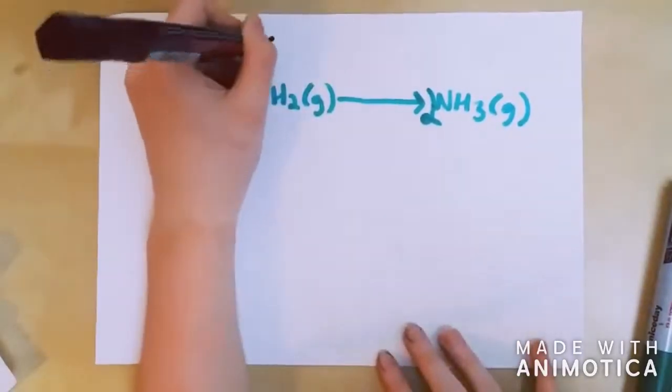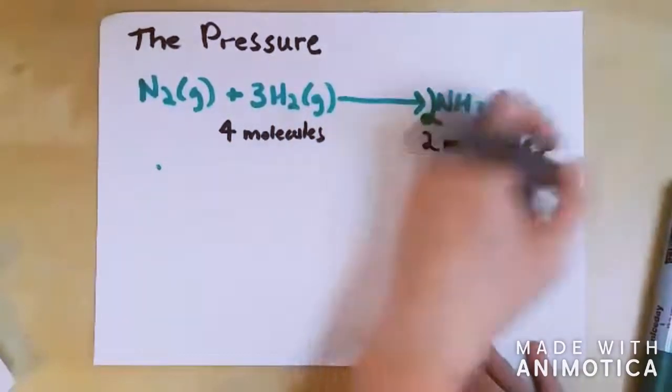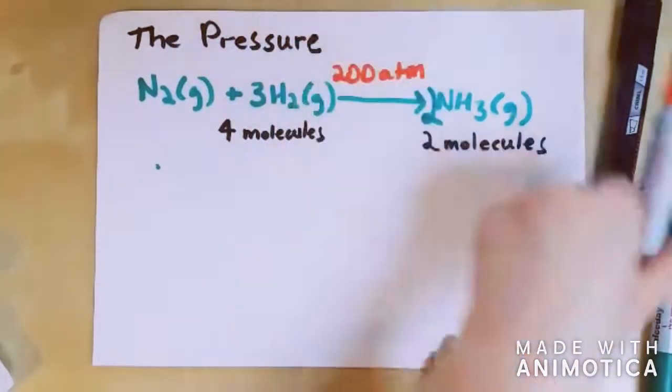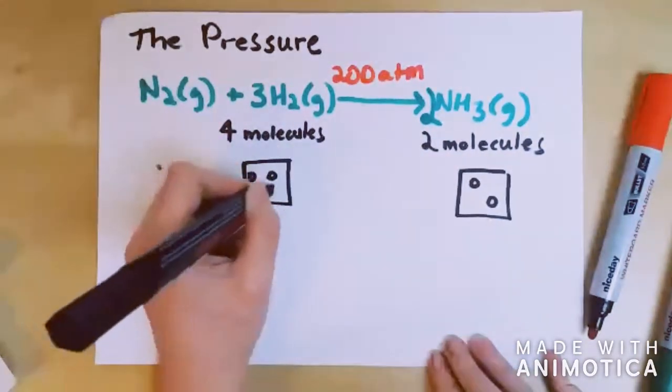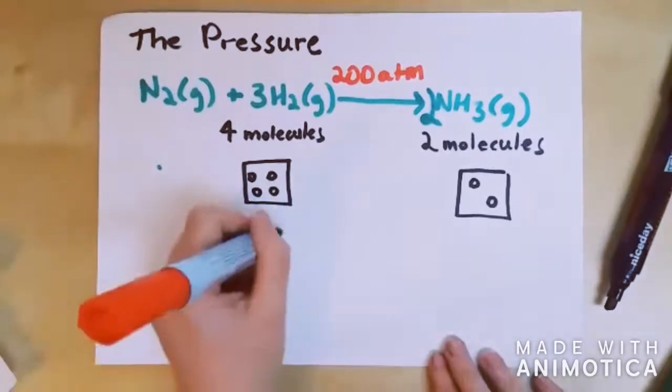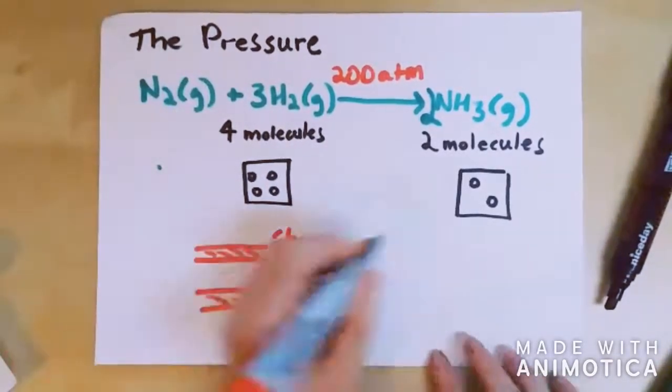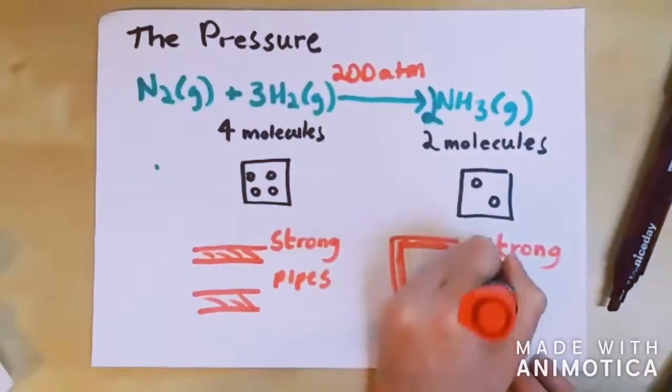The pressure. Notice that there are four molecules on the left-hand side of the equation, but only two on the right. If you increase the pressure, the system will respond by favoring the reaction which produces fewer molecules. That will cause the pressure to fall again. In order to get as much ammonia as possible in the equilibrium mixture, you need a high pressure. 200 atmospheres is a high pressure.